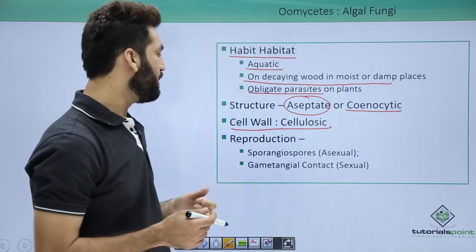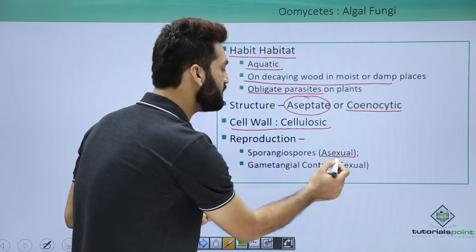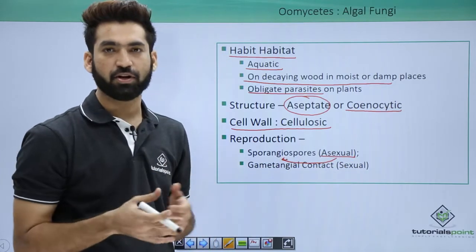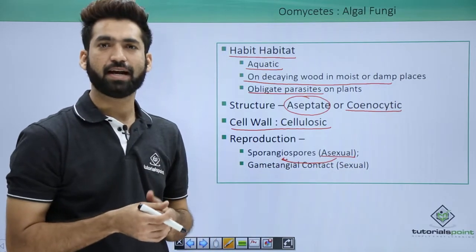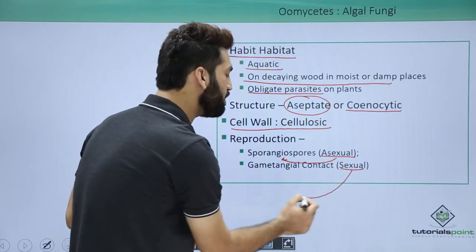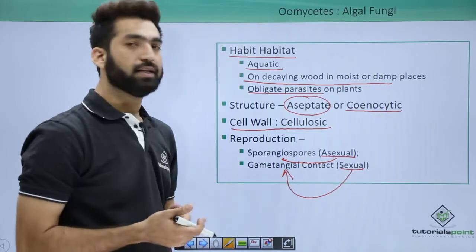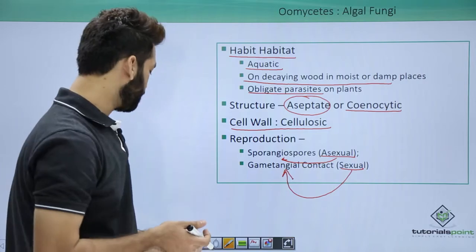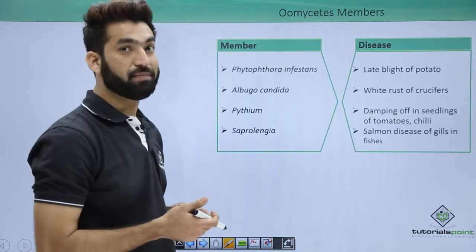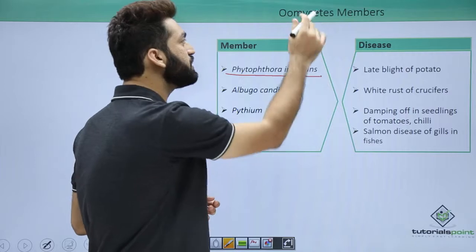When you talk about reproduction, the asexual reproduction in oomycetes takes place through sporangiospores — those are endogenous spores. When you talk about sexual reproduction, out of the five methods, they show gametangial contact. The members of this class are very important.